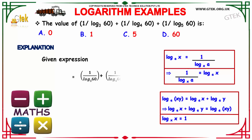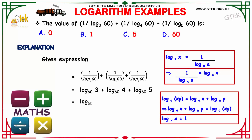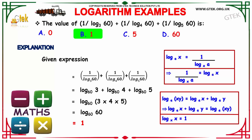Moving on to our next example: what will be the value of 1 by log 60 to the base 3, plus 1 by log 60 to the base 4, plus 1 by log 60 to the base 5? We have the options as 0, 1, 5, and 60.